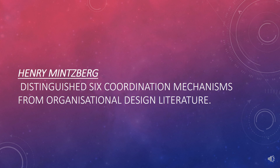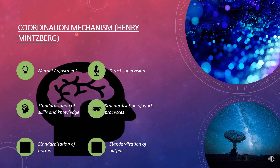Henry Mintzberg has distinguished six coordination mechanisms from organizational design literature. The first is mutual adjustment. The second is direct supervision. Then standardization of skills and knowledge, standardization of work processes, standardization of norms, and standardization of output. Let us see one by one what these are and how these six mechanisms are important in an organization to have a synchronized, coordinated effort leading to the desired objectives.